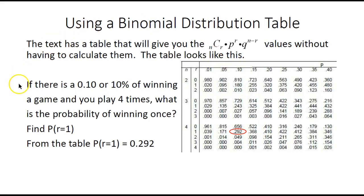In this example, we are told P is 0.1, N is 4, and R is 1.